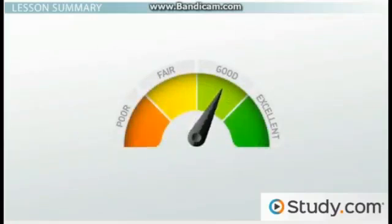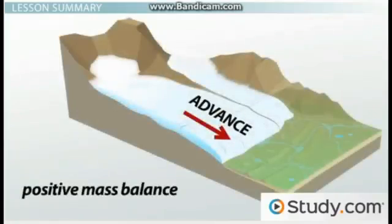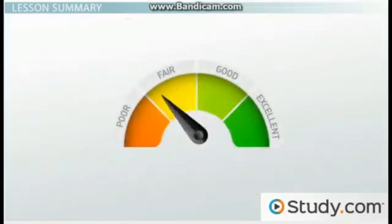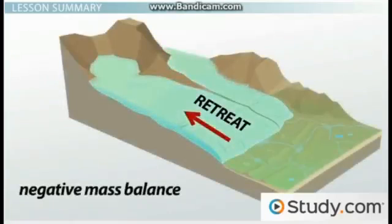If there is more growth than melting, then there is a positive mass balance and the glacier will advance. If there is a loss of mass due to faster wasting than growth, then there is a negative mass balance and the glacier will retreat.